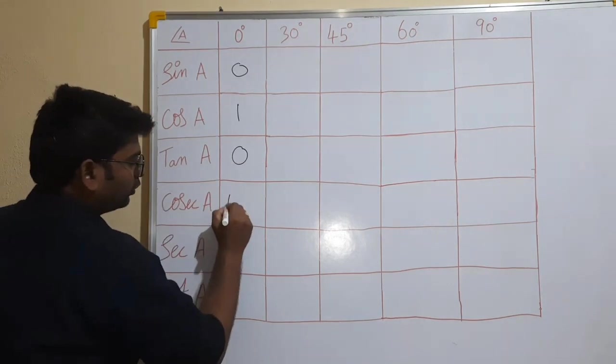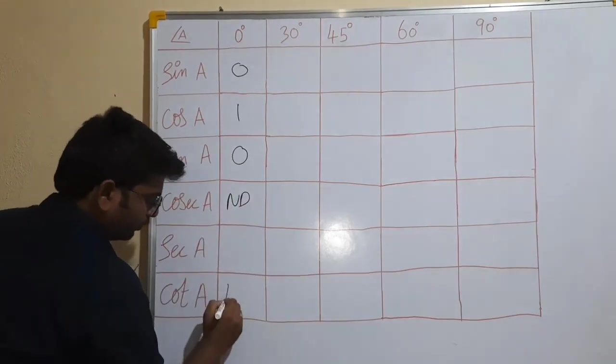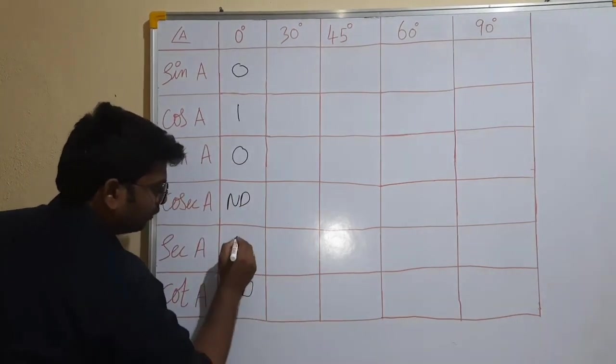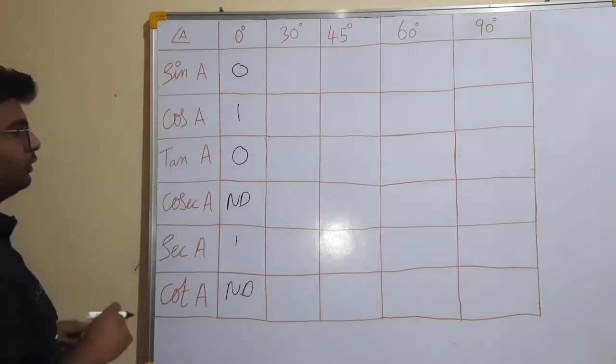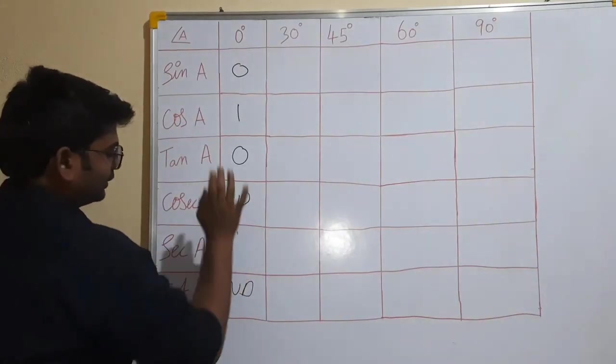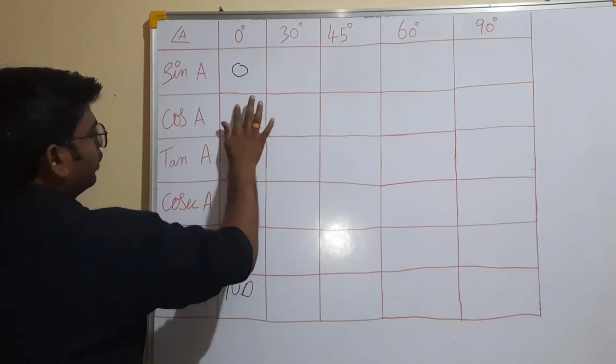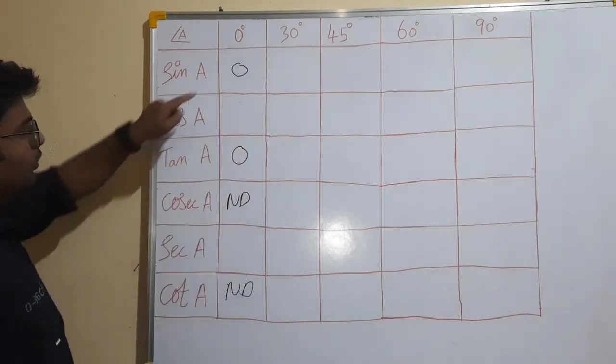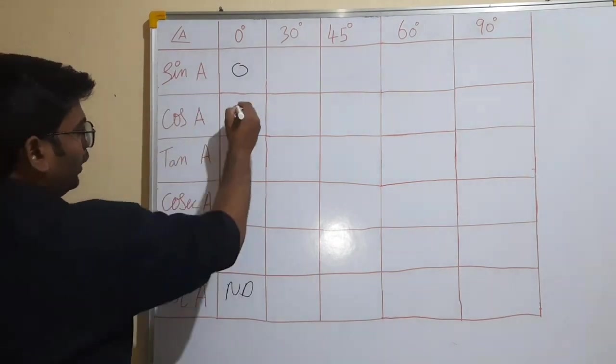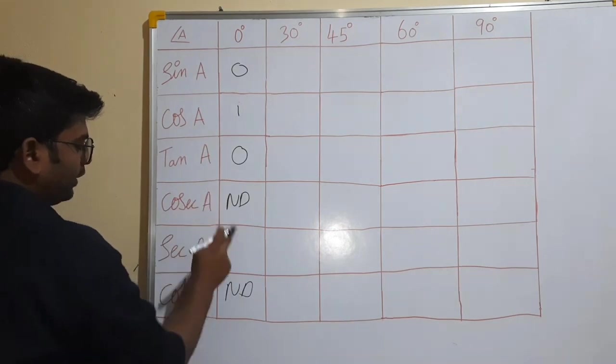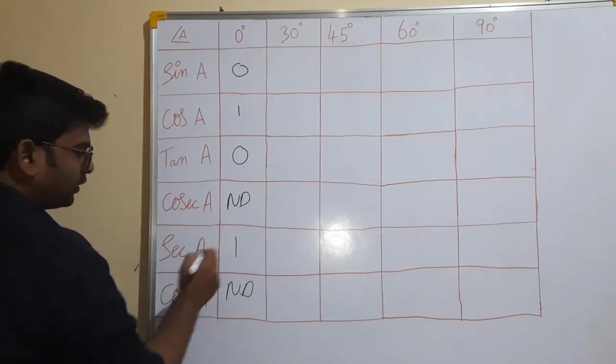Next, not defined, not defined, one. So we will erase. We will erase. Zero key, zero key, one. Not defined key, not defined key, one. Simple.